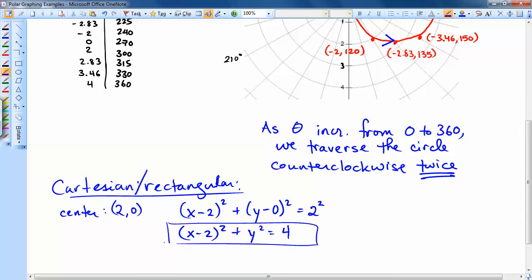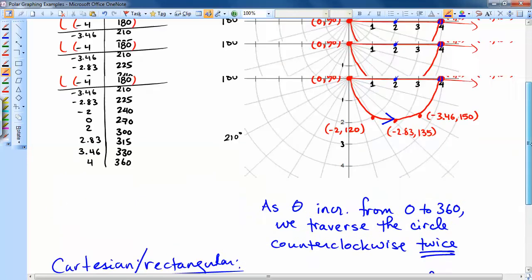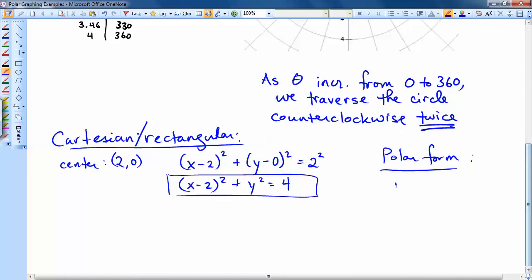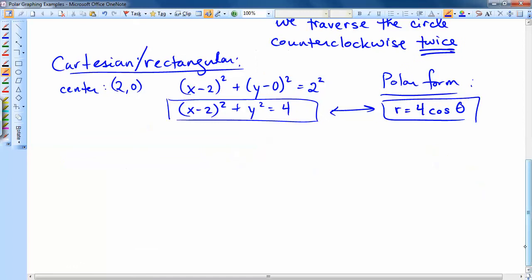Okay. So the one other thing that we did in class was, well, since this is the Cartesian form and the polar form was 4 cosine theta, and they're the same thing, we should be able to convert back and forth between the two. And so the conversion formulas that we use link up r's, theta's, x's, and y's.